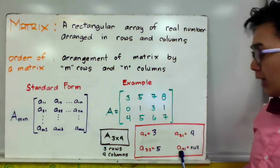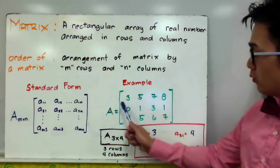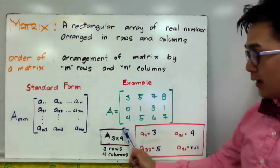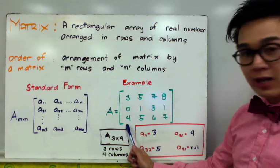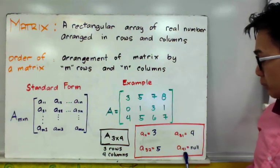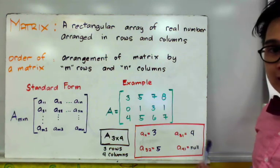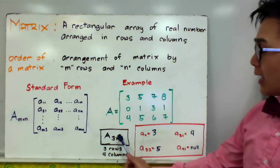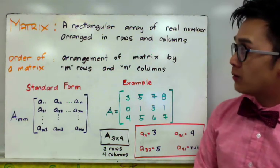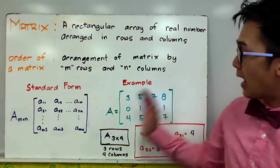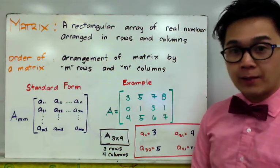If we need to find A sub 4 1, that means the 4th row — but there is no 4th row in our 3 by 4 matrix. Therefore, this particular entry is null, meaning it is empty because it does not exist in our m by n matrix. This is how we locate a specific entry in a given m by n matrix.